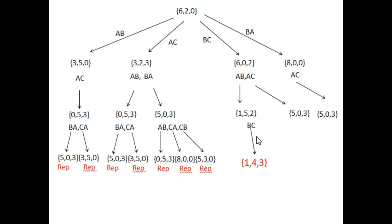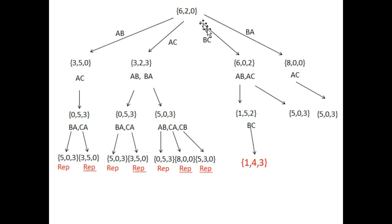What is the best way to select an action so that we will be able to find a goal and find a solution in an optimal way? Optimal way means there are multiple possible paths to reach the goal.